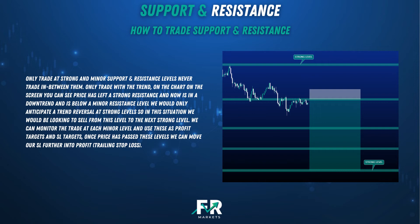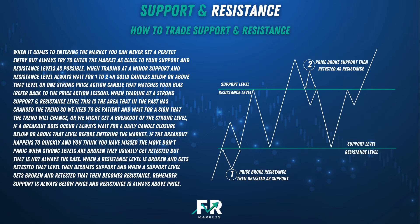We will be going through entries, stop-loss levels, and take profit levels in more detail in another lesson. When entering the market you can never get a perfect entry, but always try to enter as close to your support and resistance levels as possible. When trading at a minor support and resistance level, always wait for one to two 4-hour solid candles below or above that level, or one strong price action candle that matches your bias. When trading at a strong level, wait for a sign that the trend will change, or we might get a breakout. If a breakout occurs, always wait for a daily candle closure below or above that level before entering. If the breakout happens too quickly, don't panic — when strong levels are broken they usually get retested. When a resistance level is broken and retested, that level becomes support. When a support level is broken and retested, that level becomes resistance. Remember, support is always below price and resistance is always above price.